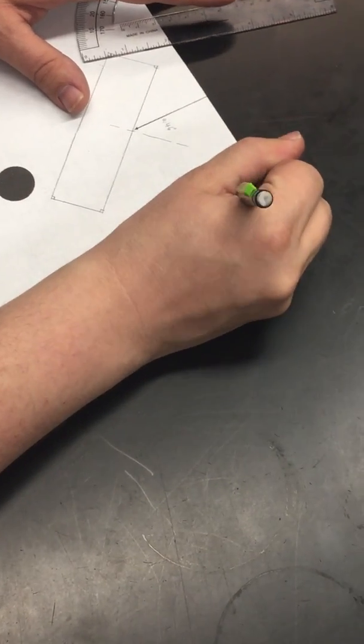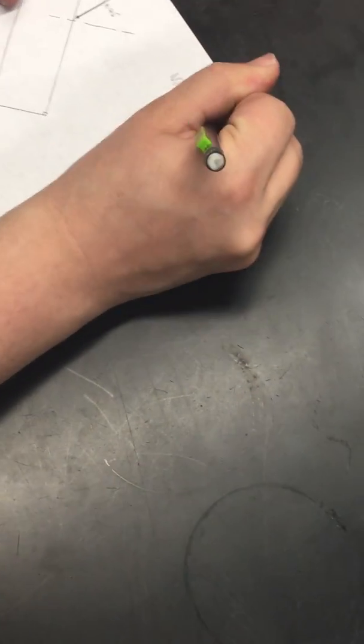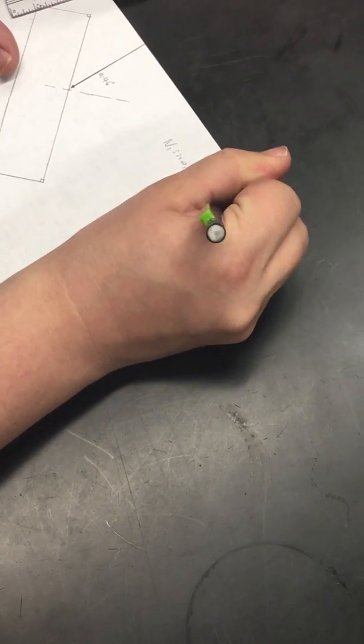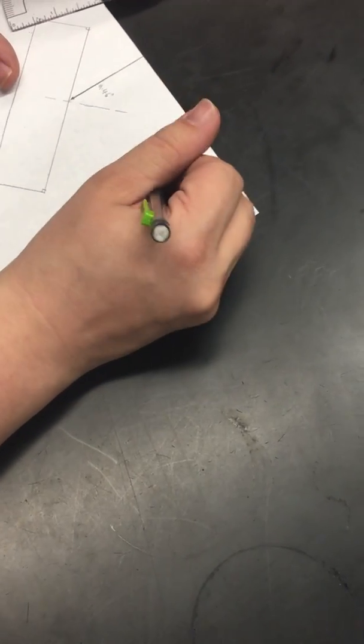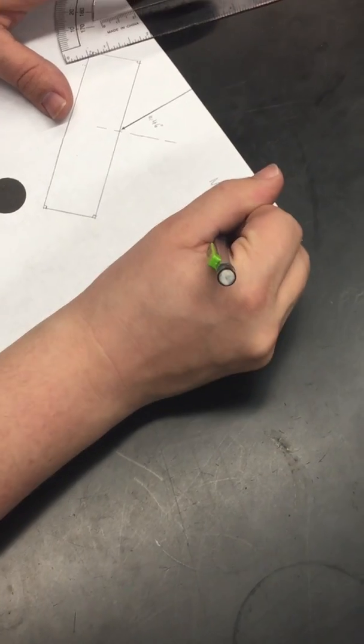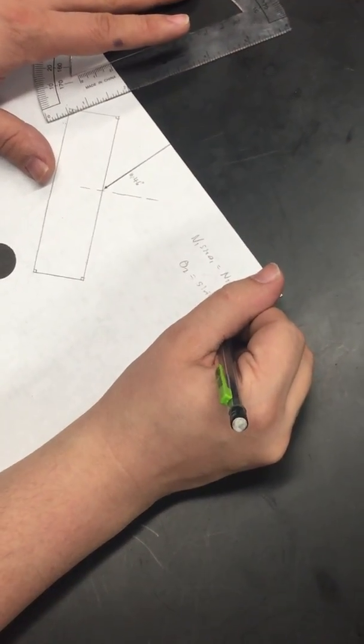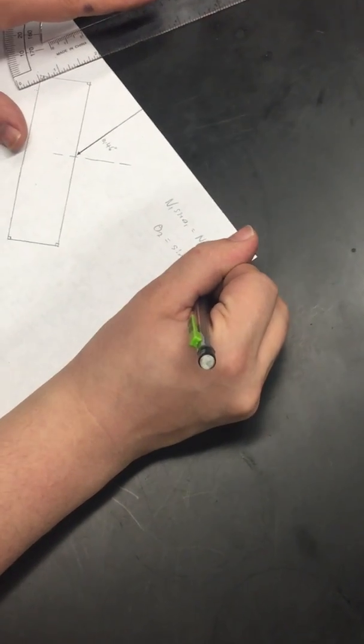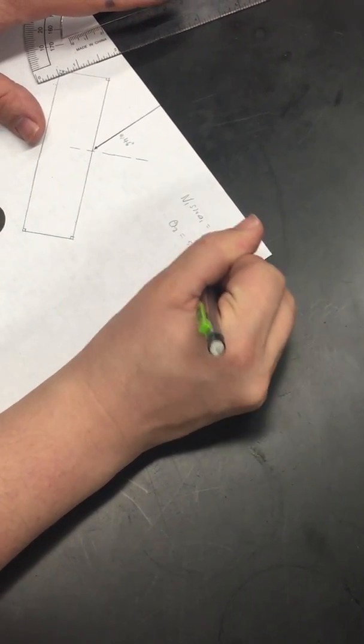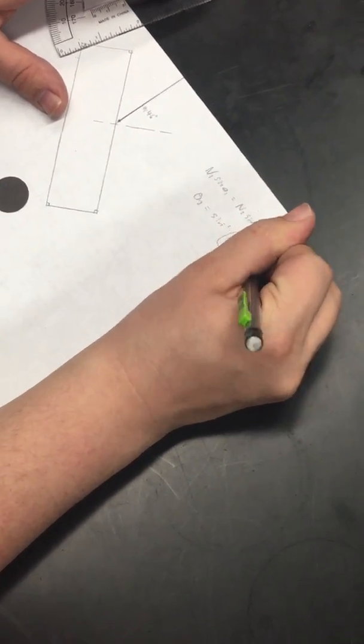So then I use N1 sine theta 1 equals N2 sine theta 2. And if I want theta 2, I could just really make this simple. Theta 2 is equal to the sine inverse of N1 sine theta 1 divided by N2. I just kind of shortcutted everything.